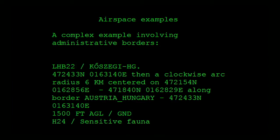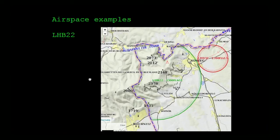Another airspace definition: it starts with a specific coordinate, then a clockwise arc with a six kilometer radius centered on another coordinate, then follows the border of Austria and Hungary up until a third particular coordinate. The green one is how it looks when you actually draw it - the circular area and where it follows the border. So when working with airspaces, some definitions are quite complex - you have to get existing data like a national border or a river, and entering these spaces into a geospatial database is quite challenging.